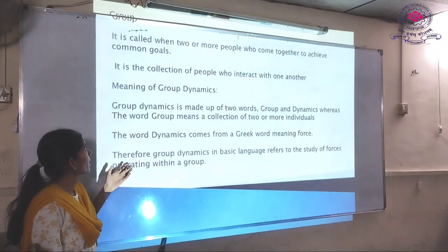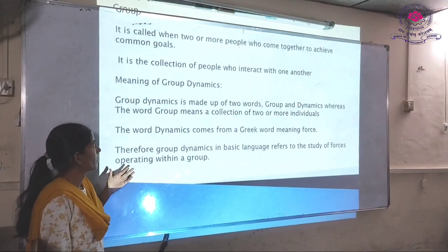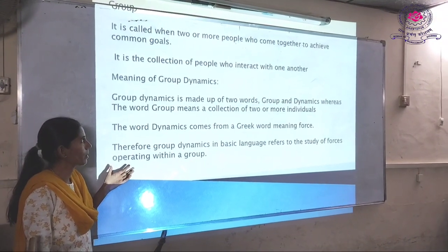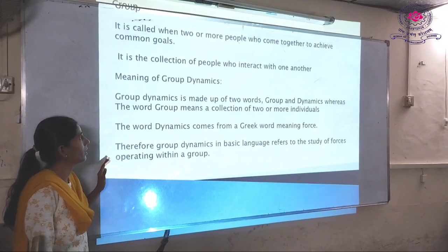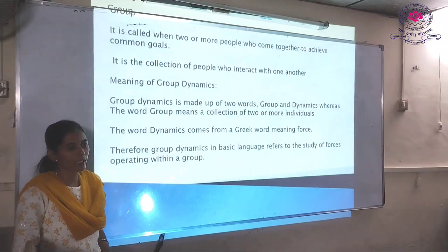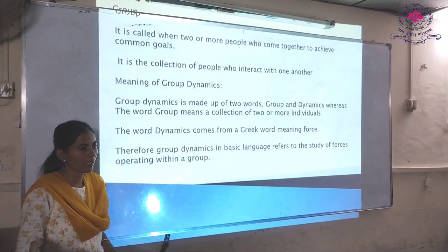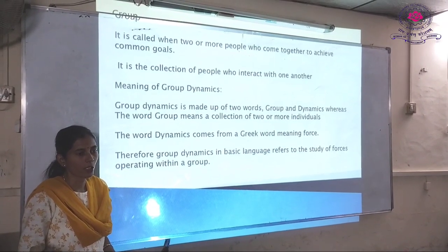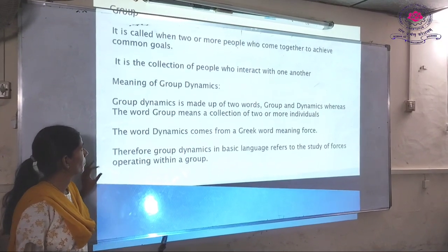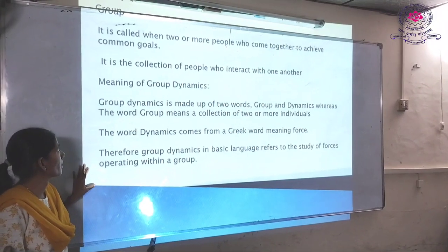Group dynamics starts with defining what is a group. A group is when two or more people come together to achieve common goals — people combined and jointly working in order to achieve those common goals. They have to interact and collaborate with each other to accomplish the defined task. It is the collection of people who interact with one another.